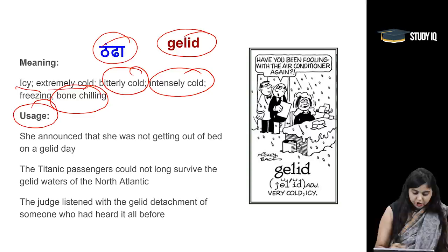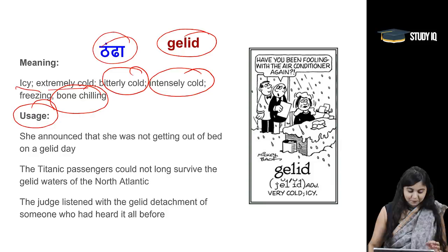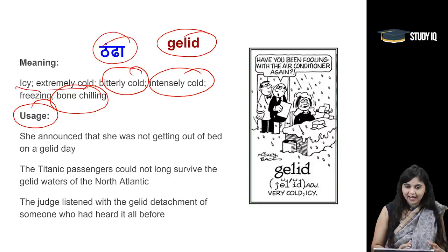Let's look at the usage. She announced that she was not getting out of bed on a gelid day. The Titanic passengers could not long survive the gelid waters of the North Atlantic. The judge listened with gelid detachment of someone who had heard it all before — that means cold detachment. So, gelid is very cold, icy.